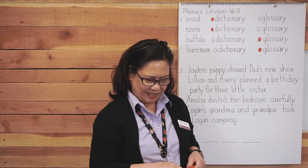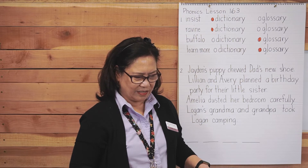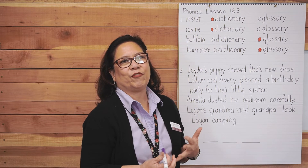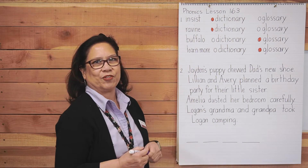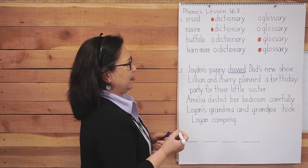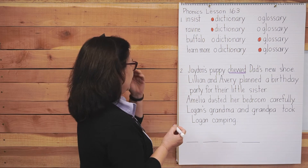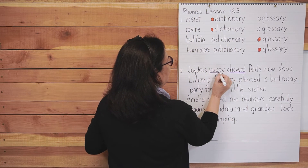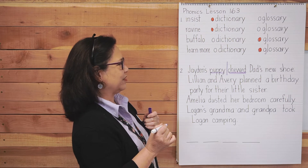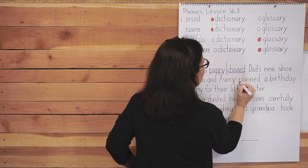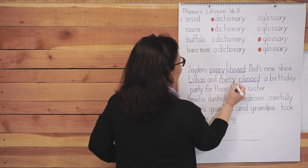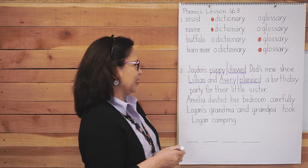Number two: read the sentences, draw a line between the subject and the predicate, underline the subject once and the verb twice. First sentence reads: Jaden's puppy chewed dad's new shoes. For me, it's easier to find the verb first. So let's look for the verb, the action word. The action word here is 'chewed,' so underline it twice. Then find the subject — who did the action? The puppy did it. Next sentence: Lillian and Avery planned a birthday party for their little sister. What is the verb? 'Planned.' And who's doing the planning? Lillian and Avery. Divide the sentence there. Pause the video and do the last two by yourself.